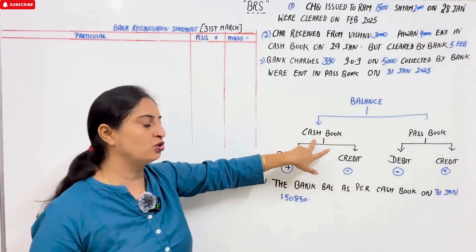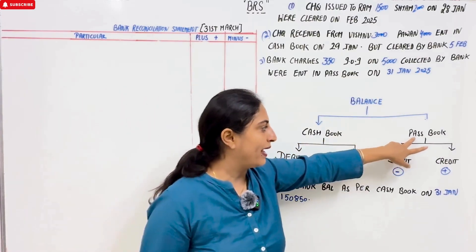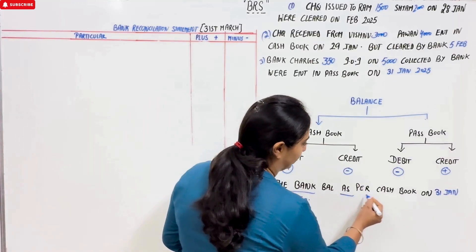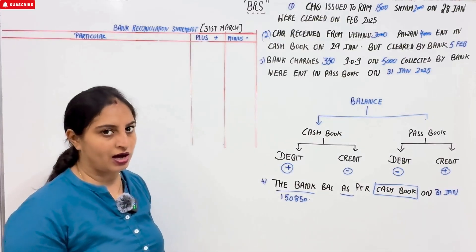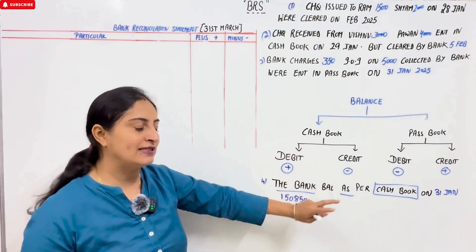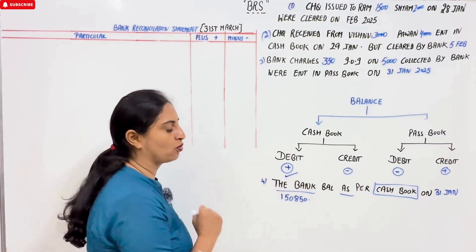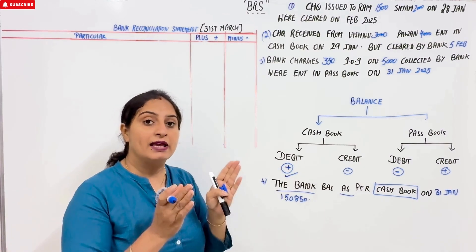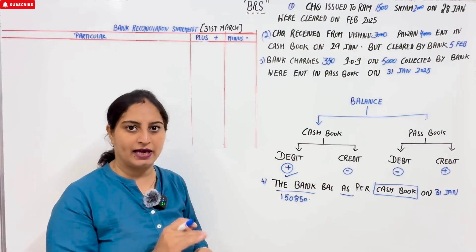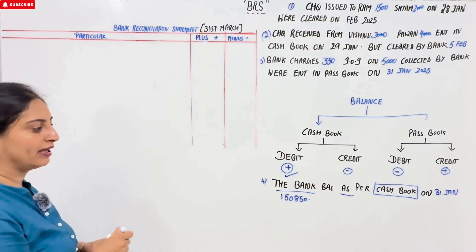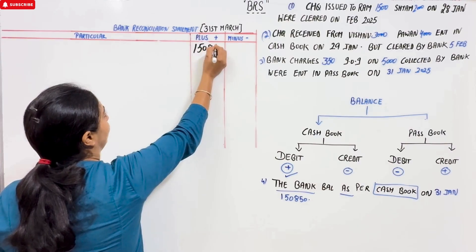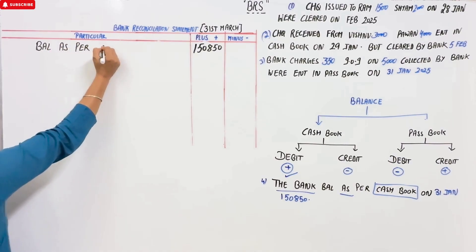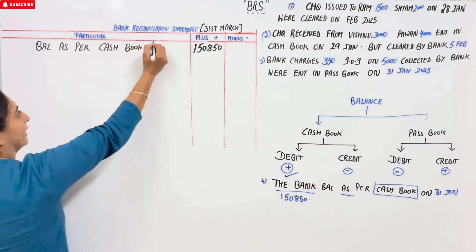Our business has a cash book and the bank has a passbook. You have to make this statement according to the balance — the bank balance as per cash book. Which balance do we use? Cash book. If nothing specific is mentioned, we take the positive balance, which in the cash book means the debit balance. So we start with ₹1,50,850 in the plus column and write 'Balance as per cash book — Debit balance'.